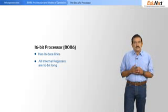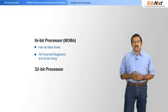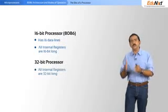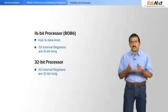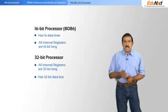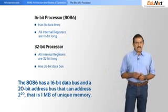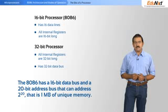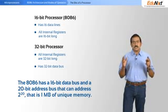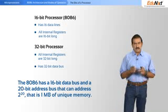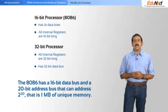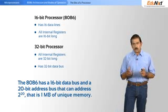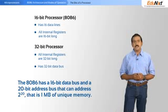If you were to talk of a 32-bit processor, you would have the same thing but with 32-bits of internal registers and a 32-bit data bus. In the case of the 8086, while the data bus is itself 16-bits long, the address is 20-bits wide. Therefore, you can actually address up to 1 megabyte of RAM or ROM — 2 to the power 20 is 1 megabyte.